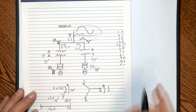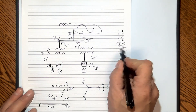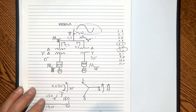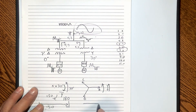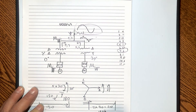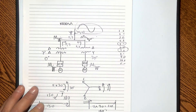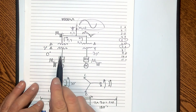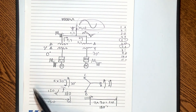For the seventh harmonic: because it is a positive sequence harmonic, it actually rotates the same direction as the 60 Hz fundamental. So imagine 7×30 = 210 degrees going in the same direction as 30 degrees with the fundamental — the net difference is again 180 degrees. So both the fifth and seventh harmonics coming up through the power system cancel out from both sides.